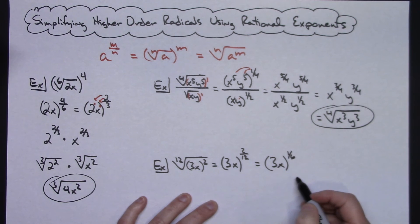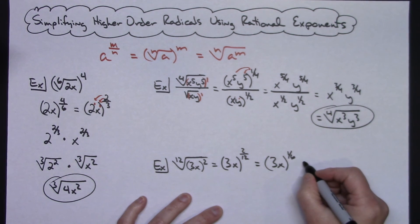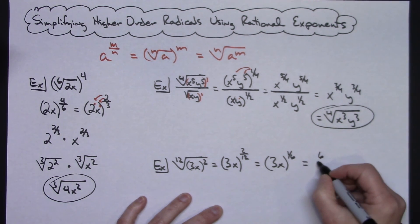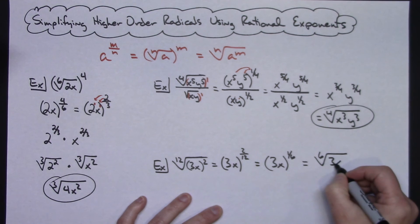Now there's not much else I can do to this. So then I can just go ahead and go back into my radical form. So that would be the sixth root of 3x.